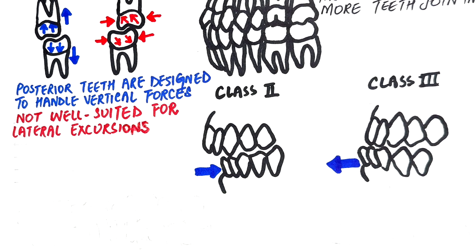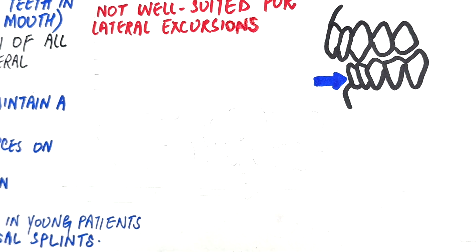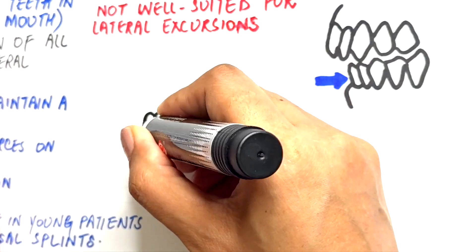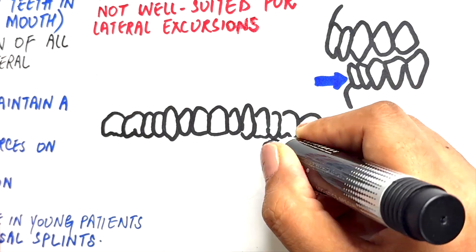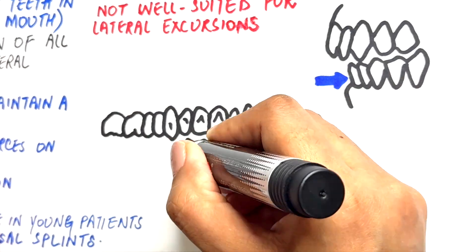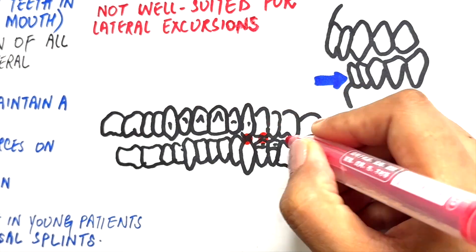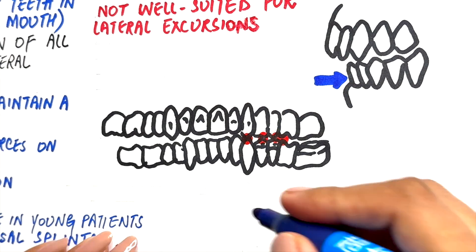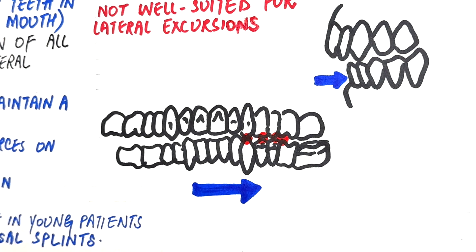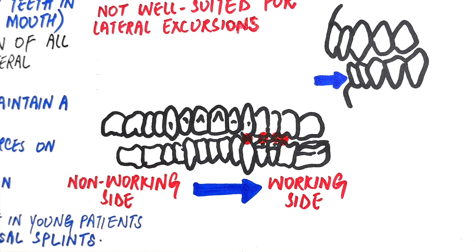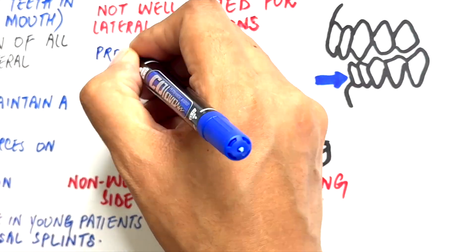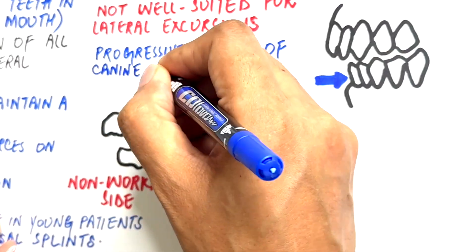Group function promotes disocclusion of the posterior teeth on the working side by progressive contact of the canine, first premolar, second premolar, and the mesiobuccal cusp of the maxillary first molar on the working side.